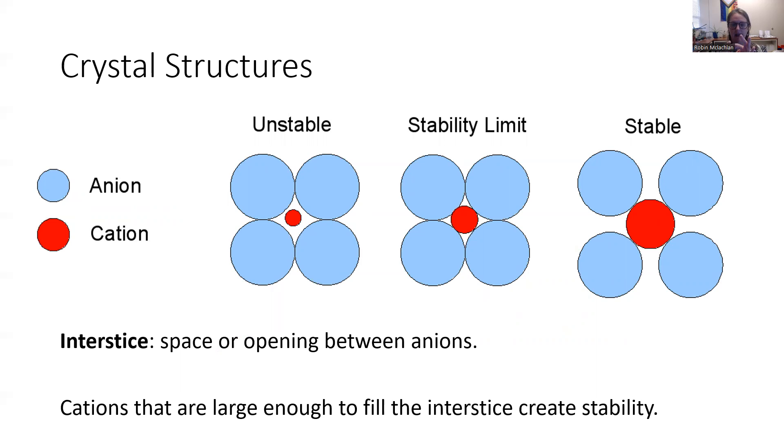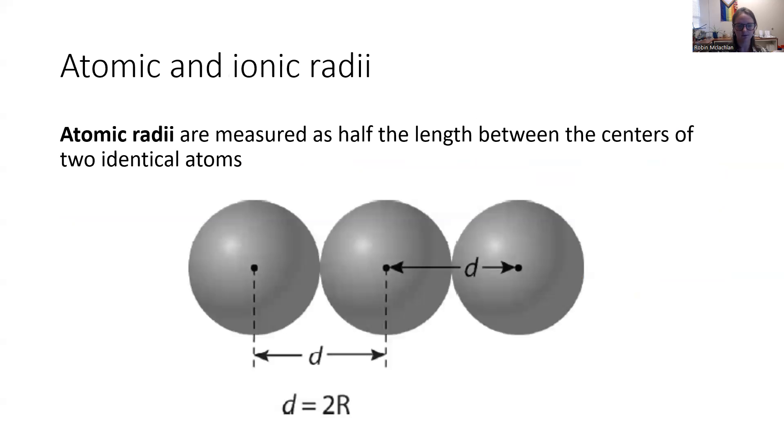As that cation gets bigger and bigger, that causes the space or opening between those ions, the interstice, to get smaller and smaller and those become more stable. So we have to think about the distance between the cation and the anion. How much space is there? And we can refer to that distance in two different ways.